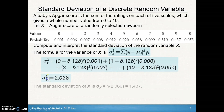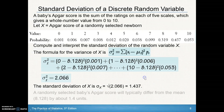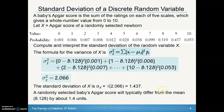That gives us our variance. Square-rooting that gives us our standard deviation. Remember, standard deviation is roughly the average amount the scores differ from the mean — so each APGAR score differs from the mean by about 1.437 units.